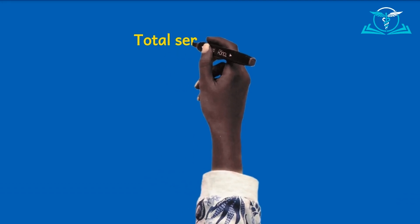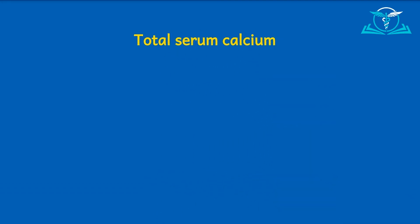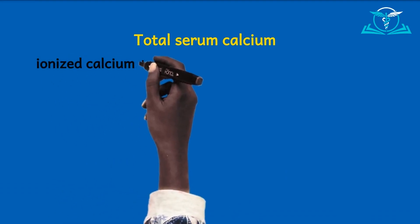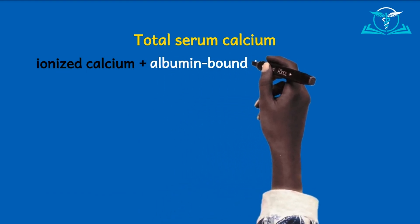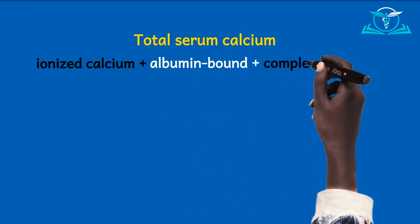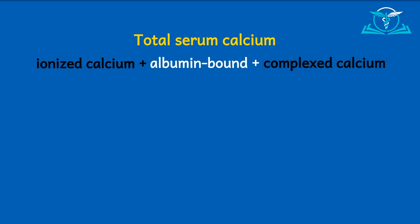First things first, let's understand what total serum calcium means. The total serum calcium concentration is the addition of the ionized calcium — the calcium ions which are freely circulating in blood, not bound to any plasma proteins — plus those which are bound to albumin, plus those which are complexed to other anions like phosphate ions to form compounds like calcium phosphate.